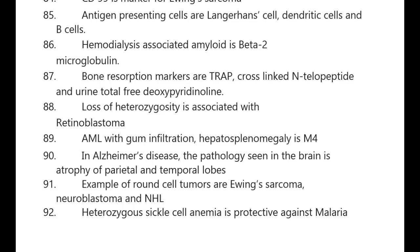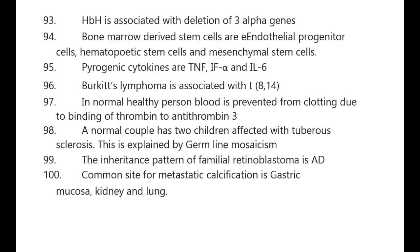Bone resorption markers are TRAP, cross-linked N-telopeptide, and urine total free deoxypyridinoline. Loss of heterozygosity is associated with retinoblastoma. AML with gum infiltration and hepatosplenomegaly is M4. In Alzheimer's disease, the pathology seen in the brain is atrophy of parietal and temporal lobes. Examples of round cell tumors are Ewing's sarcoma, neuroblastoma, and non-Hodgkin's lymphoma. Heterozygous sickle cell anemia is protective against malaria.